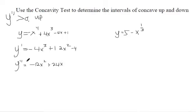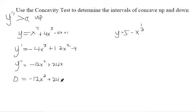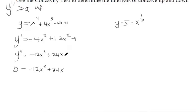For concavity, we're checking whether it's concave up or concave down, so we set the second derivative equal to 0 — that's the potential place where it could switch from concave up to concave down. By the way, if you switch concavity at a certain location on the x-axis, that's called an inflection point. If you go from concave up to concave down, then you have an inflection point.